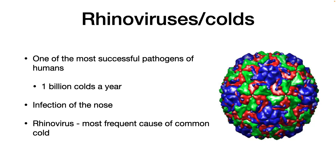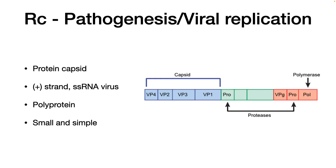We now turn to respiratory viruses and we're going to begin with one of the most successful pathogens of humans, and that is the rhinovirus. Rhinoviruses are one of the viruses that cause colds and they cause about one billion colds a year. It is an infection of the nose, and rhinoviruses are the most frequent cause of the common cold. So let's dive into the virus.